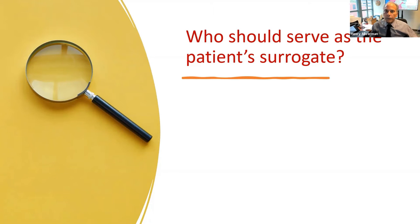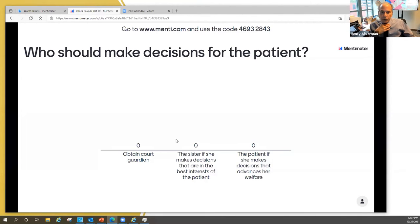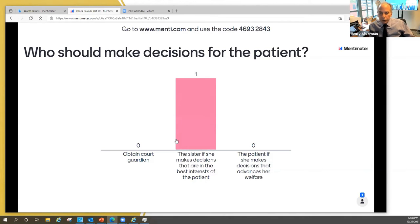Please go to menti.com and use code 4693-2843 to vote. The three choices are: obtain a court guardian; nominate the sister if she makes decisions in the best interest of the patient; or have the patient make decisions if those decisions advance her welfare. Note that psychiatry has determined she lacks capacity just for leaving AMA.